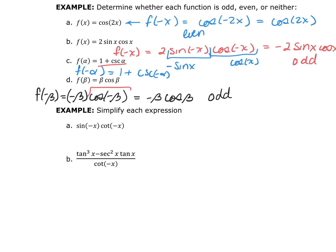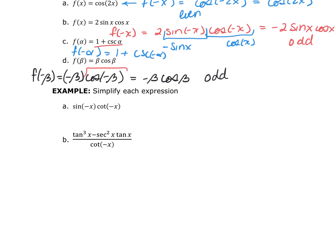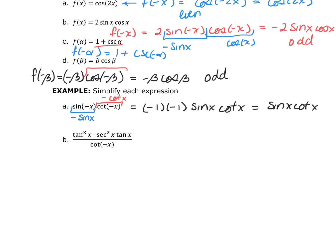We use odd/even properties to simplify trig expressions. For sin(−x)·cot(−x): since sine is odd, sin(−x) = −sin(x); since cotangent is odd, cot(−x) = −cot(x). So this becomes (−sin x)(−cot x) = sin(x)·cot(x). The two negatives cancel.